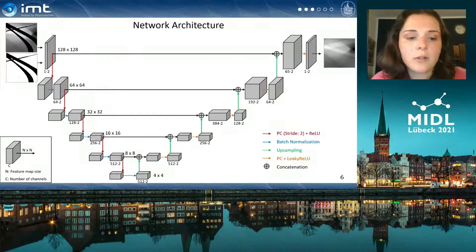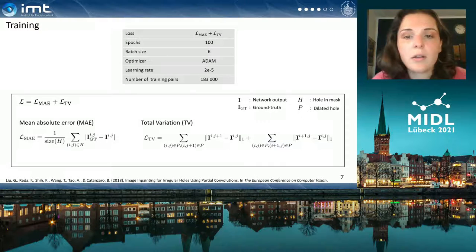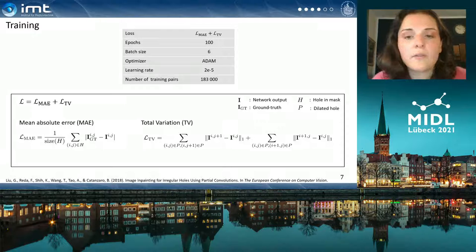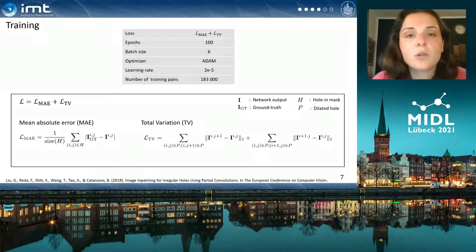We train the network with a combination loss of mean absolute error and total variation. In all, we train for 100 epochs with approximately 180,000 training pairs of simulated projection data of a human body phantom.